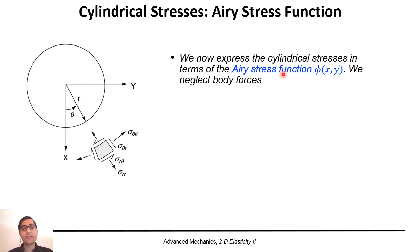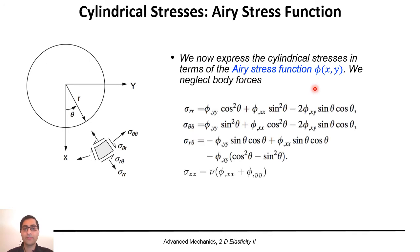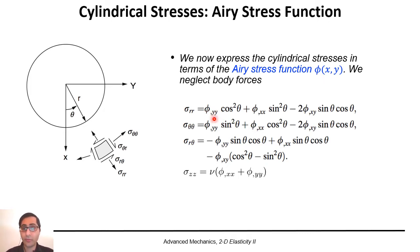We now express the cylindrical stresses in terms of the Airy stress function phi. We end up with this relation. You see that sigma_rr, theta_theta, r_theta, and zz are defined as partial derivatives of the Airy stress function phi with respect to x, y, and z — the Cartesian coordinates.